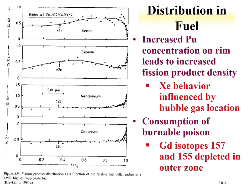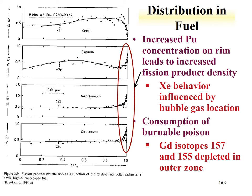The increase in plutonium concentration on the rim leads to an increase in fission product density on the rim. With more plutonium on the rim, there is more fissile material there — the initial uranium fissile concentration in fuel is about 4%, but plutonium production increases fissile isotopes on the rim. We see higher cesium concentrations on the rim, as well as higher neodymium and zirconium on the rim. Neodymium and zirconium are relatively flat until the rim, whereas cesium shows a higher concentration in the center as well, due to the volatility behavior of cesium not seen with neodymium and zirconium.